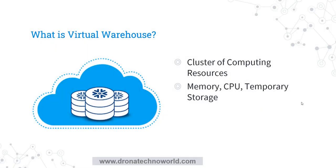Before going to see all these states, let's understand what a virtual warehouse is. The virtual warehouse in Snowflake is nothing but a cluster of computing resources. These computing resources are used to perform various operations such as DML operations or SQL execution. Mainly these compute resources consist of memory, CPU, and temporary storage. When we use the virtual warehouse we are using these computing resources, and the main expense occurs because of the usage of these computing resources.